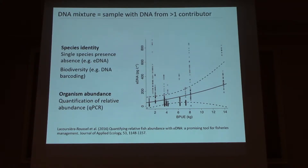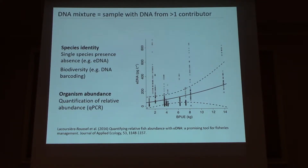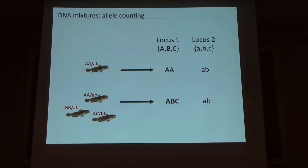We've heard some talks in this genetics portion already about quantitative PCR. The idea would be that if you take a mixture sample representing multiple specimens, the more specimens present, the more quantity of DNA would be there, and you should see a positive relationship. There have been a number of papers out recently in the past three to five years attempting to do this. One of them, La Coussiere Roussel, used gill netting biomass as an index of relative abundance and quantified the amount of DNA — there is a positive relationship, but you can see it's pretty messy. We were hoping to improve upon that through a radically different way of enumerating specimens from DNA mixtures, called allele counting.